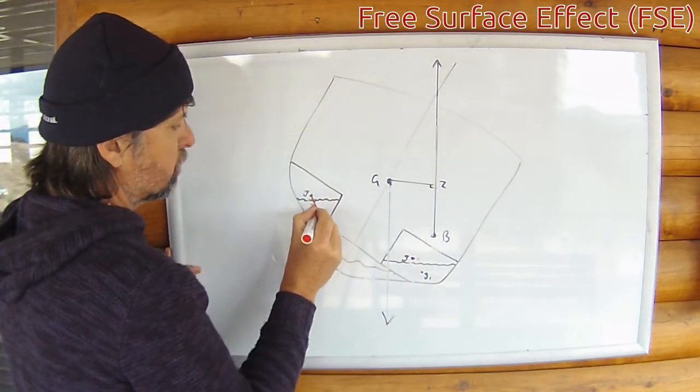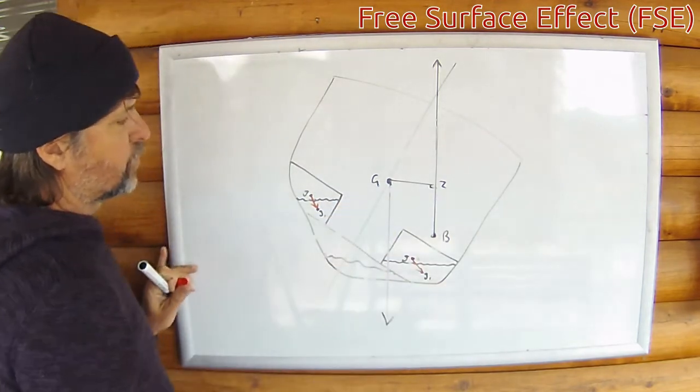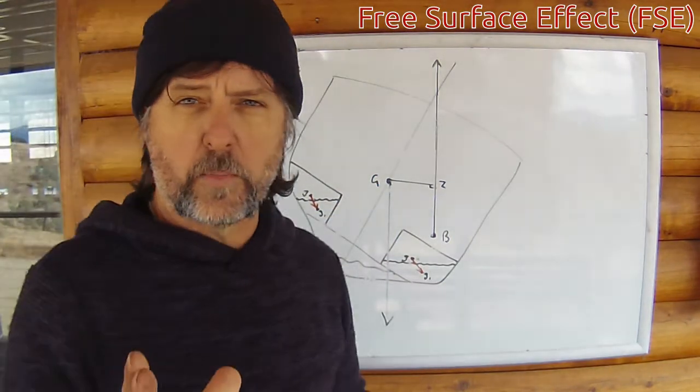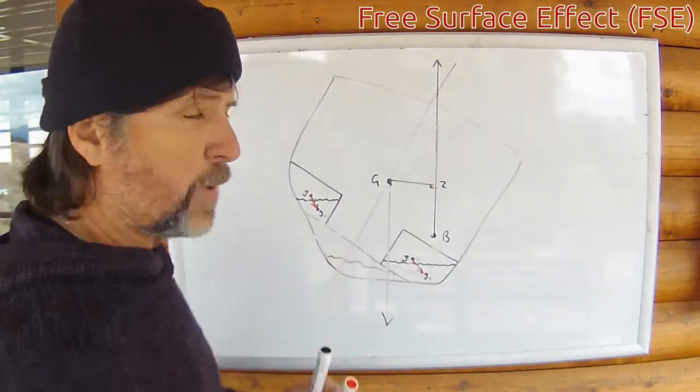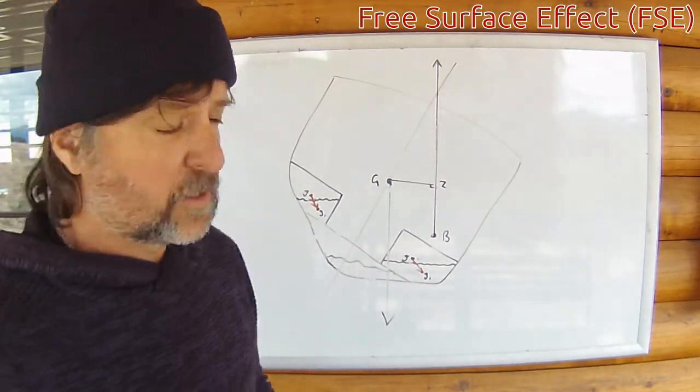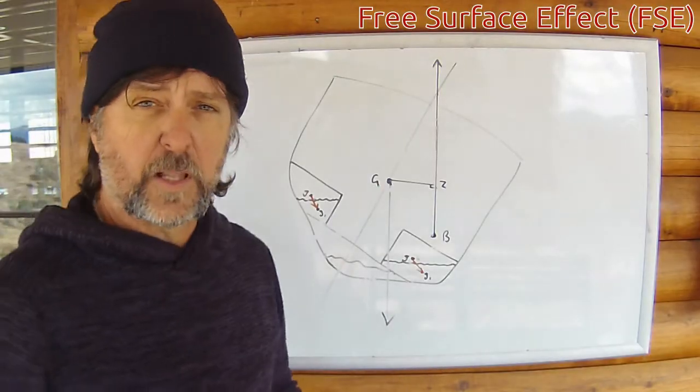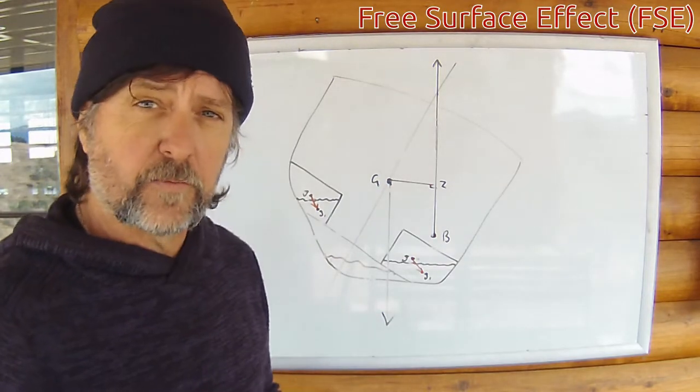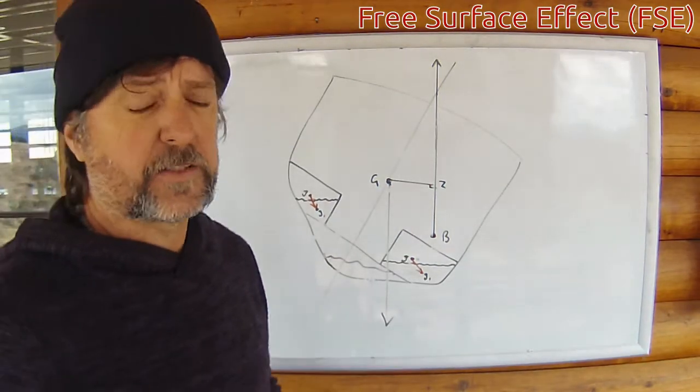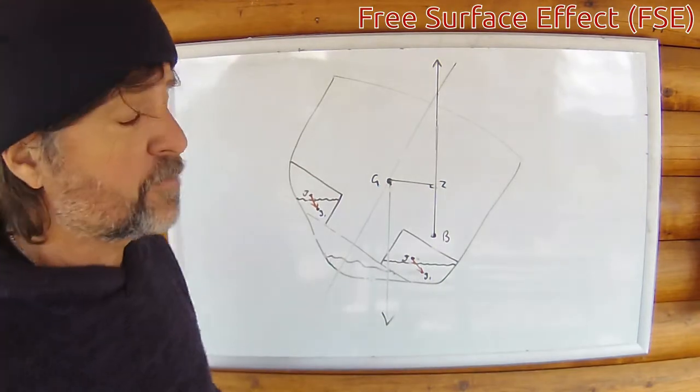G has moved to g1, little g that is, has moved to g1. This has exerted a moment on the vessel. Now we need to know how much mass is in the tank and how much it moves, but luckily again this data can be found from the stability book that the naval architect has provided us with, so it's not that difficult.